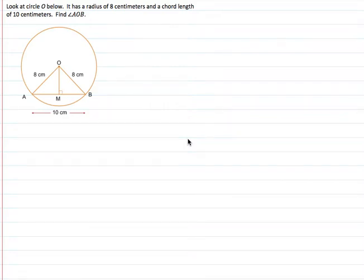Here we have circle O that has a radius of 8 centimeters and a chord length of 10 centimeters. And they want us to find the angle AOB. So we're looking for this guy right here.